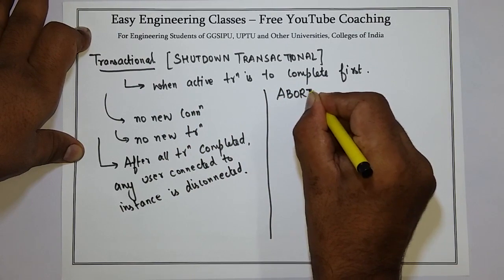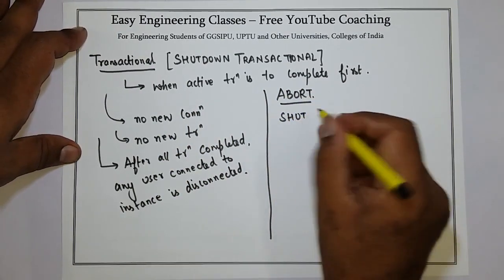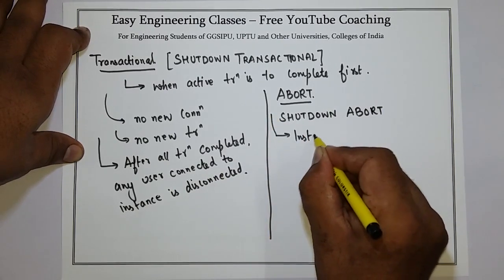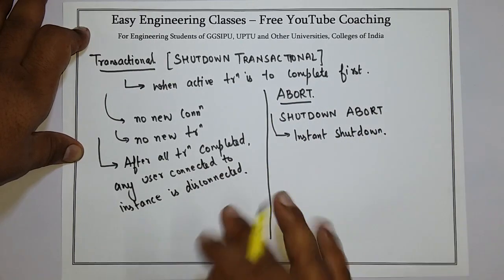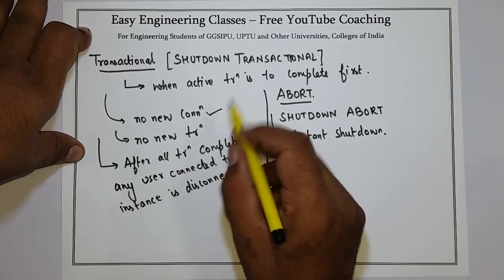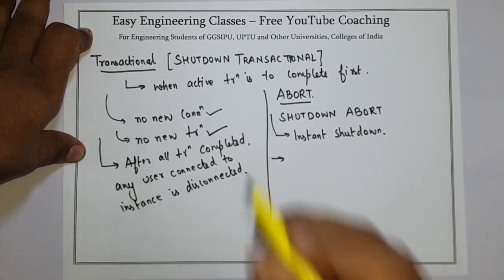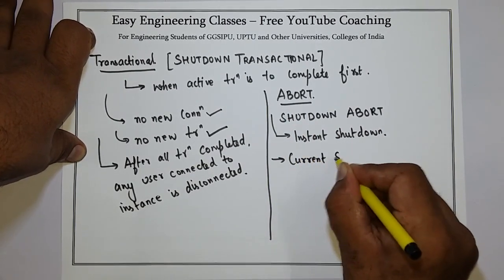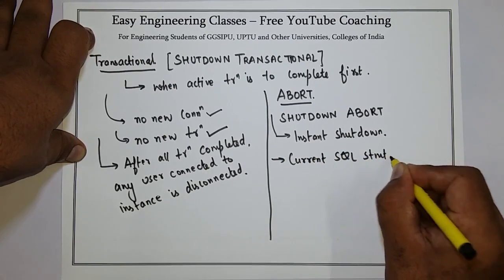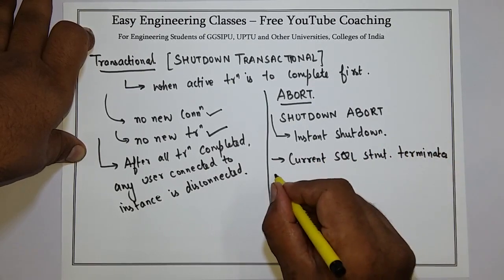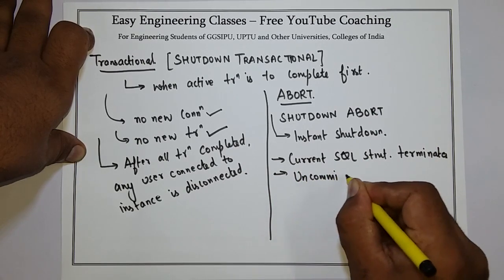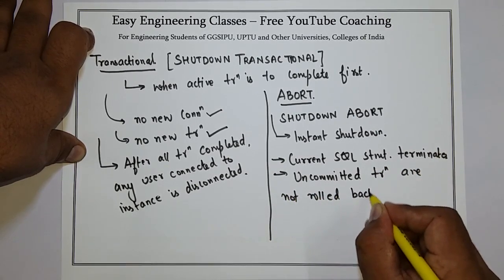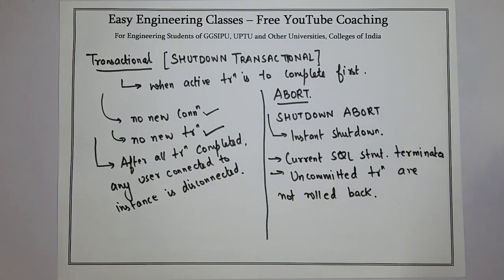The last method is abort. The command is shutdown abort. As the name suggests, it is an instant shutdown. The conditions are the same — no new transaction and no new connection. What is unique about abort is that any current SQL statement being executed will be terminated immediately, and uncommitted transactions are not rolled back.